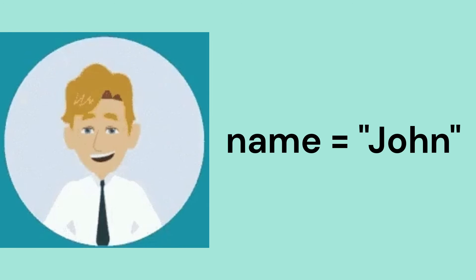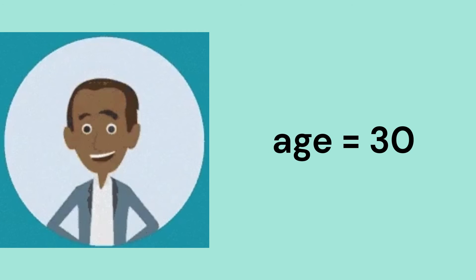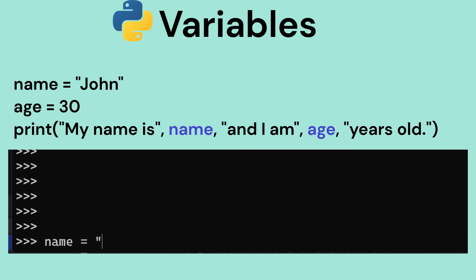For example, let's say we want to print someone's name and age. We can do this by creating variables for name and age and then using them in the print statement.